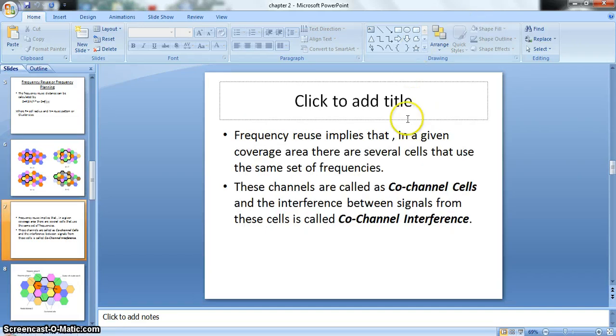Frequency reuse implies that in a given coverage area there are several cells that use the same set of frequencies. Since we have very limited frequency spectrum, frequency has to be reused by the cells. The cells that use the same set of frequencies are called co-channel cells and the interference between the signals from these cells is called co-channel interference.